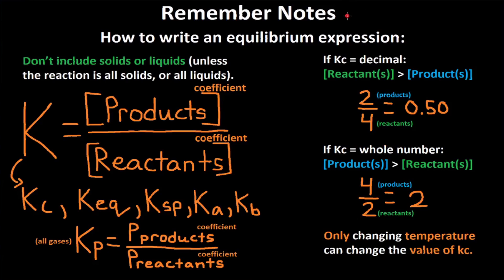These are remember notes — basically a summary of everything covered in this video. Don't include solids or liquids unless the reaction is all solids or all liquids. K equals concentration of products divided by concentration of reactants; coefficients become exponents. If the reaction is all gases, Kp can be used: partial pressure of products divided by partial pressure of reactants, coefficients still become exponents. If Kc is a decimal, reactant concentration is greater than product concentration. If Kc is a whole number, product concentration is greater than reactant concentration. Remember, only changing temperature can change the value of Kc.